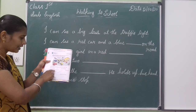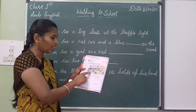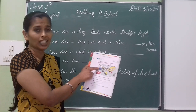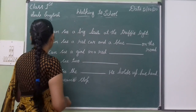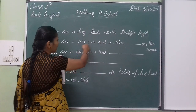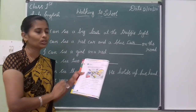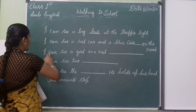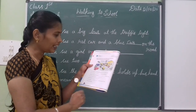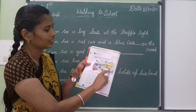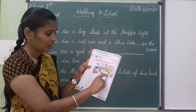Second one: 'I can see a red car and a blue blank on the road.' Here we can notice two cars — one is red and another is blue. So: I can see a red car and a blue car. Third: 'I can see a girl on the red blank.' I can see a girl on the red scooter.